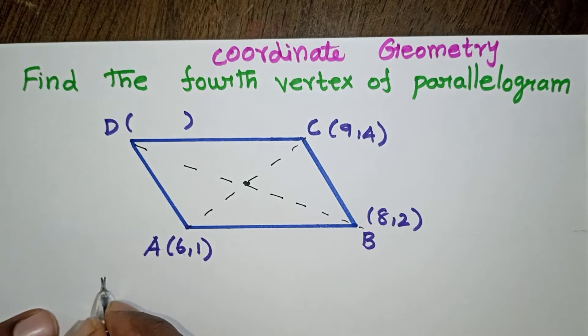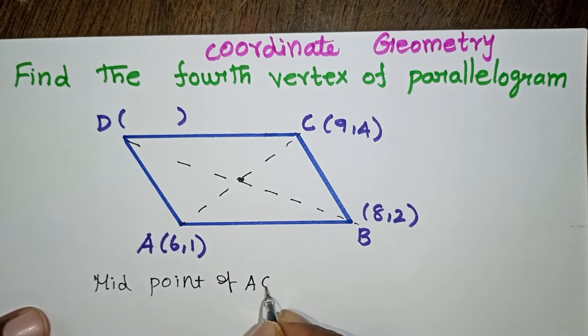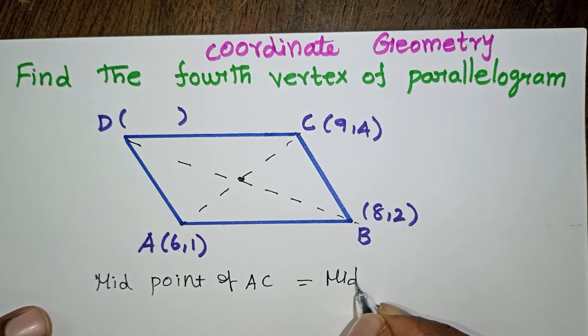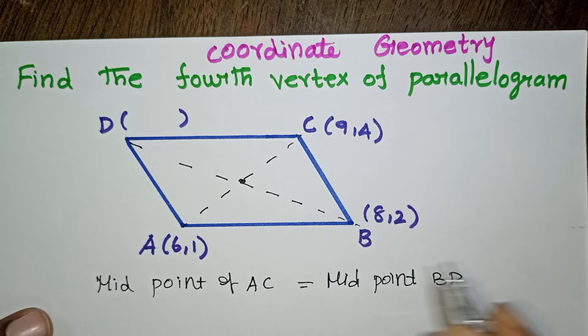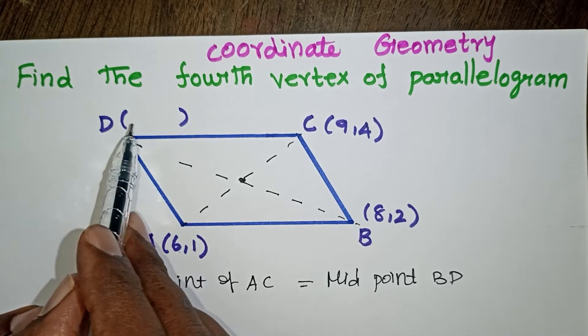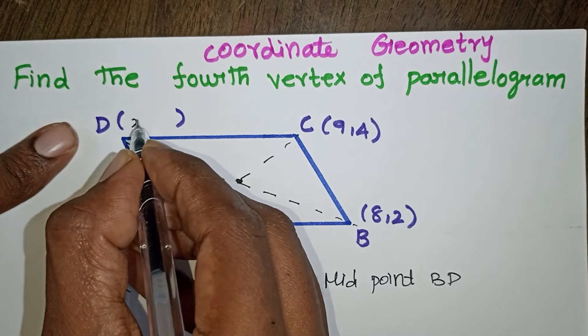So we can write that midpoint of AC equals midpoint of BD. The vertex D we don't know, let us take it as X comma Y. Let us apply the midpoint formula.